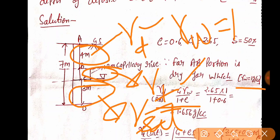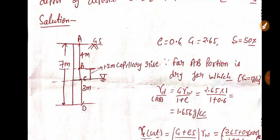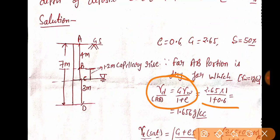So it may be where you are reading the question — when you read the question, gamma w is 9.81 kN per meter cube. So the solution is not wrong; you will also get the correct answer, but your answer will be different from this question. I will use gamma w = 1 gram per cc (1 ton per meter cube). Now, gamma d = G·γw / (1 + e) = 2.65 × 1 / (1 + 0.6) = 1.656 gram per cc.